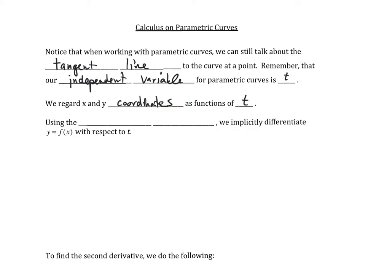So the natural question becomes, how are we going to find the slope of this tangent line? The answer to this question is, we will be using the chain rule. So using the chain rule, we will implicitly differentiate y equal to f of x with respect to t.